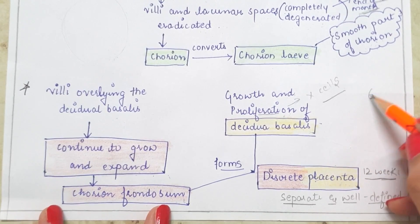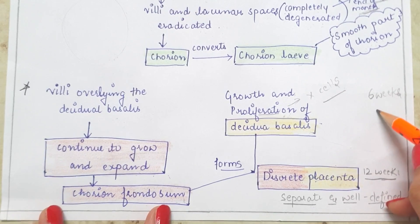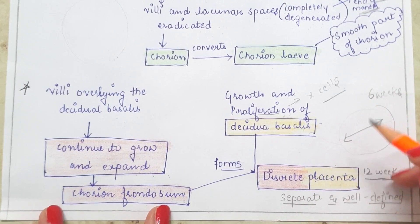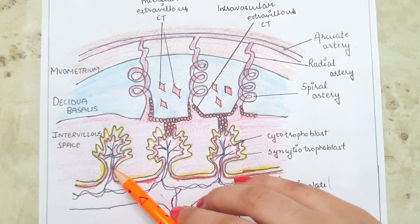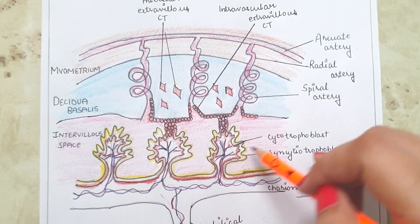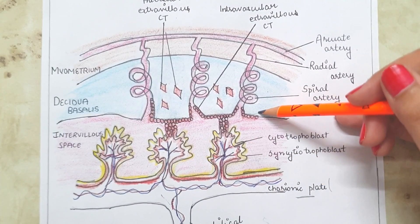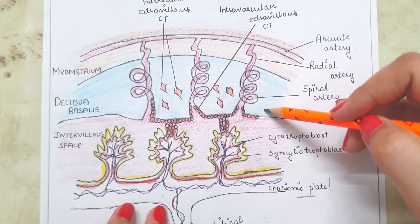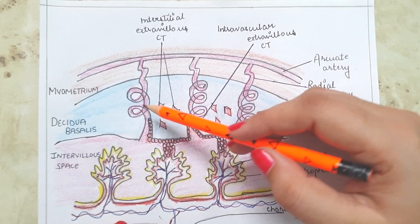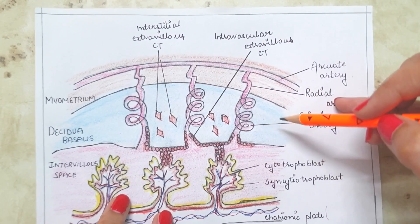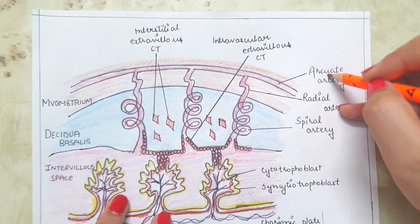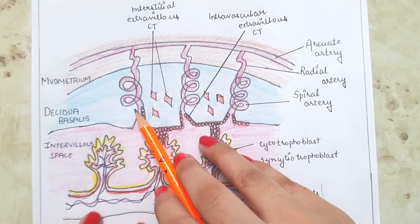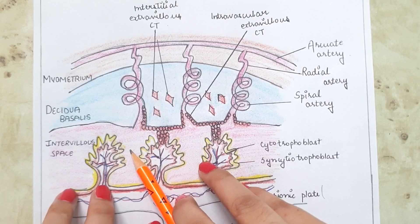The development of the placenta is completed at the 12th week, having started at the 6th week. After the 12th week, the circumference of the placenta increases but its thickness does not. The villi connect the chorionic plate — the fetal side of the placenta — with the basal plate — the maternal side. Spiral arteries arise from the arcuate artery in the myometrium and supply blood to the decidua basalis and the placenta.